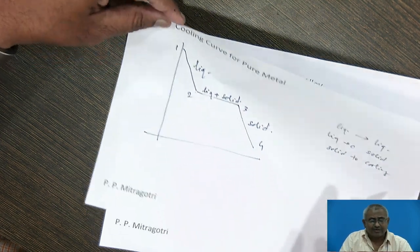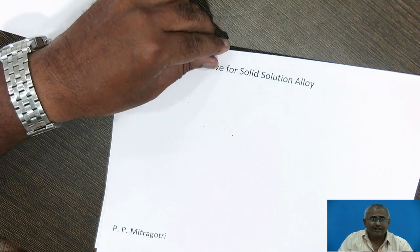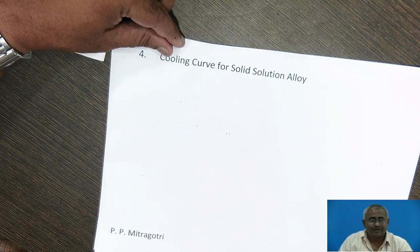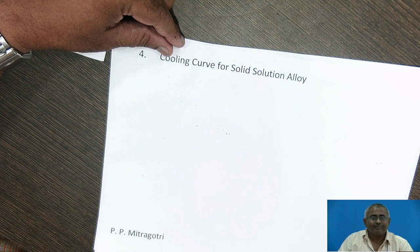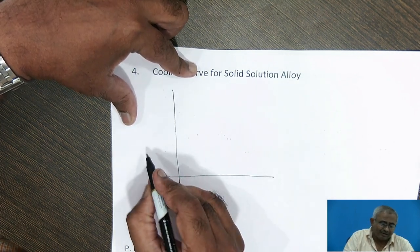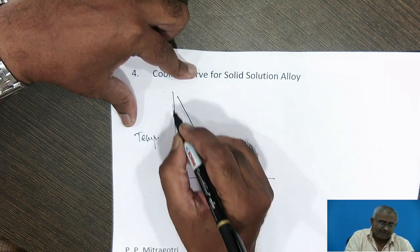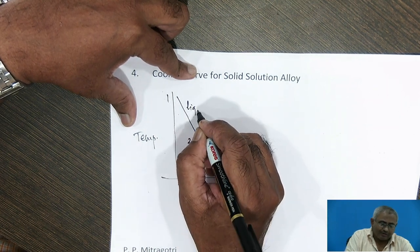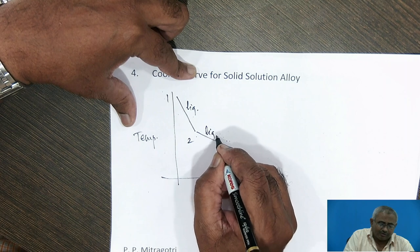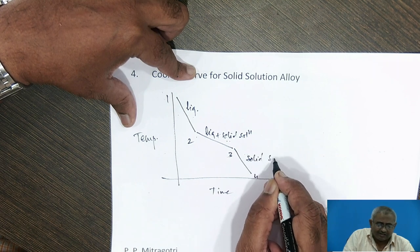The next cooling curve we are going to discuss is the cooling curve for a solid solution alloy. This will differ from the cooling curve for pure metal because pure metals have a fixed melting point and freezing point, while solid solution alloys freeze over a range of temperature. Their cooling curve will appear slightly different. From one to two is liquid-to-liquid cooling, two to three is liquid-to-solid solution transformation, and three to four is the solid solution cooling stage.